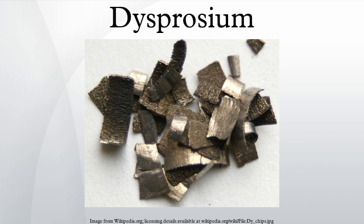In 1878, erbium ores were found to contain the oxides of holmium and thulium. French chemist Paul Lecoq de Boisbaudran, while working with holmium oxide, separated dysprosium oxide from it in Paris in 1886. His procedure involved dissolving dysprosium oxide in acid, then adding ammonia to precipitate the hydroxide. He was only able to isolate dysprosium from its oxide after more than 30 attempts. On succeeding, he named the element dysprosium from the Greek dysprositos, meaning 'hard to get.'